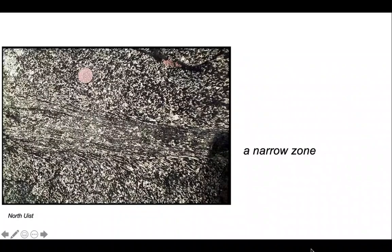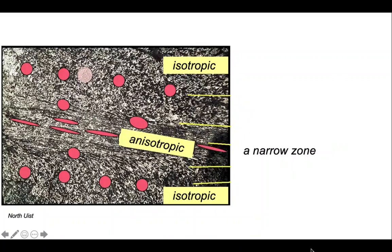This outcrop in North East is where many of the key concepts were developed. It shows the issue where we have a narrow zone of shape fabric encased in isotropic material. And we can cartoon it up using these ellipses here.